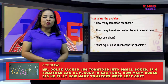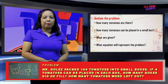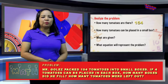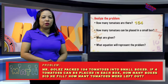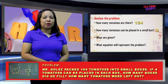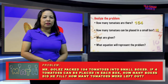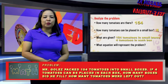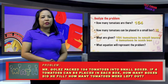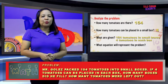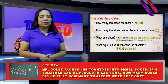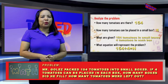How many tomatoes are there? 154. How many tomatoes can be placed in each small box? 4. What are given? 154 tomatoes in small boxes, 4 tomatoes in each box. What equation would represent the problem? 154 divided by 4 equals N.